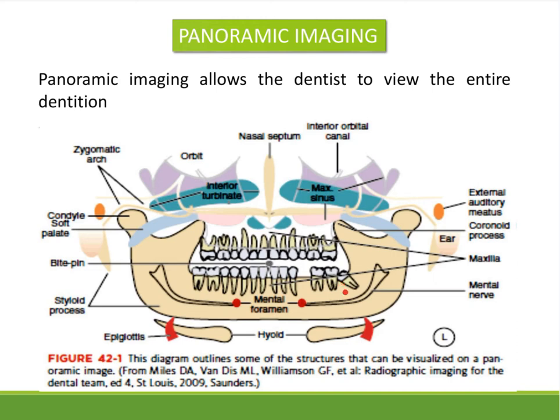We take an extra-oral image, and if we need further clarification — for example, whether the root of the tooth is on the nerve canal, or whether surgical exposure would cause nerve-related problems — we can understand all this in an overall view with a panoramic image. The same applies for periapical infections, cysts, and tumors. It allows the dentist to view the entire dentition in a single image.